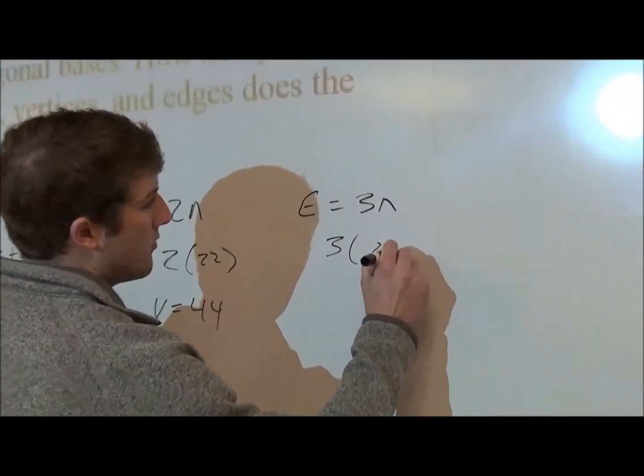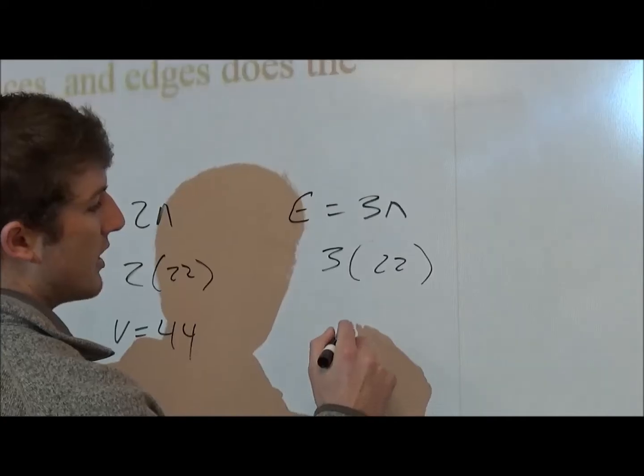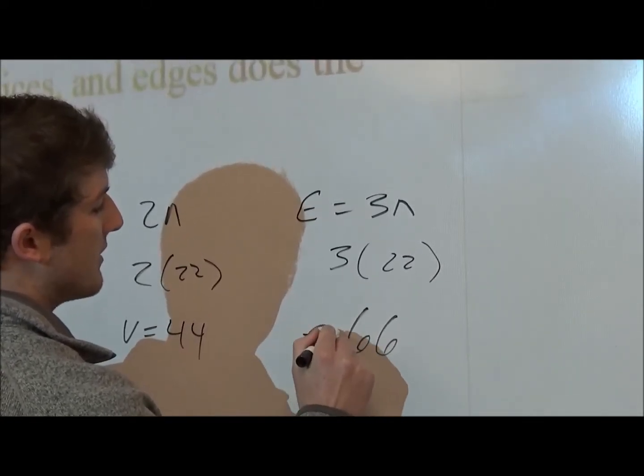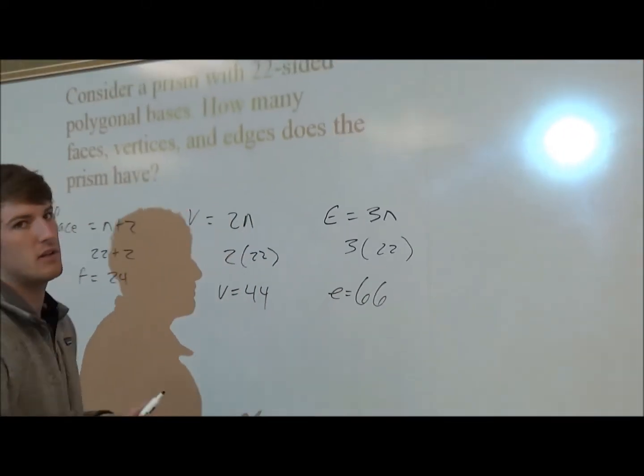The rule that can be applied to any number of sided polygon for edges is 3 times n. So we'll plug in 22, and this is going to give us 66 as the number of edges.